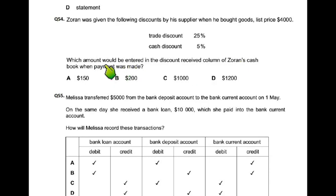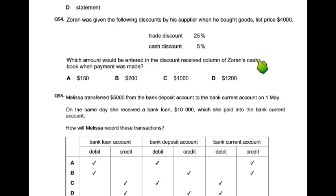What would be entered in the discount received column of the cash book? Discount received kaun sa hota hai? Cash discount hota hai. Cash discount mein discount allowed bhi ho saktay hai, receive bhi ho saktay hai. Yeh receive poochh raha hai. Toh yahan trade discount nahi ho ga.